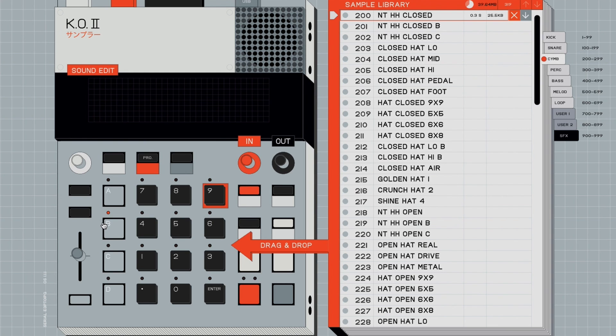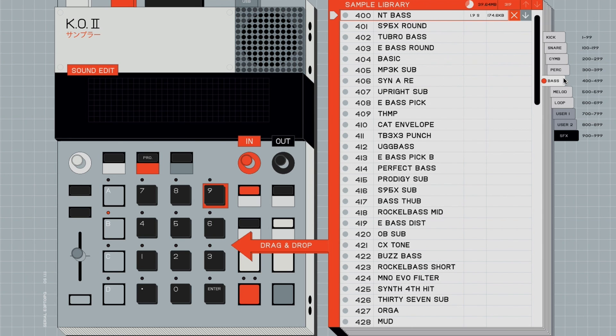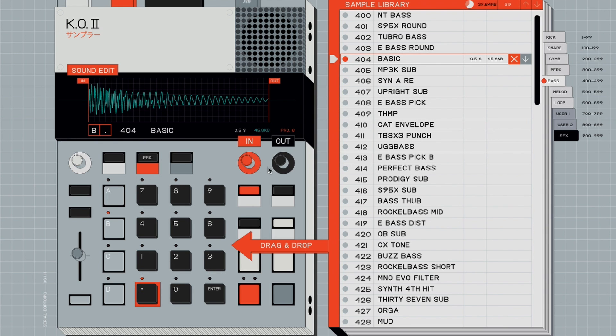Now I'm in group B. To load sounds onto the pads using the sample tool, we simply drag and drop them. Now for group B, I want to use bass sounds. I want that to be my bass track. So I'm going to click on the sounds on the sample tool to actually preview them and I can actually hear them as I click and I will drag and drop them onto the pads that I want the sound to be.